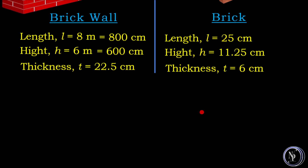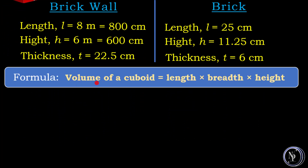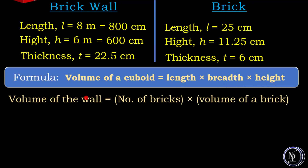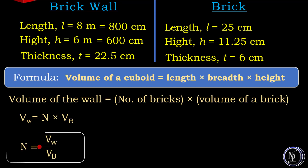Now to find the volume of the wall we use the formula: volume of a cuboid is equal to length into breadth into height. In this case it will be length into height into thickness. The volume of the wall equals the number of bricks into the volume of a brick. Since we need to find the number of bricks, we rewrite the formula as N equals VW divided by VB.